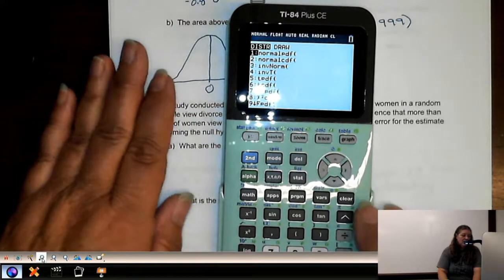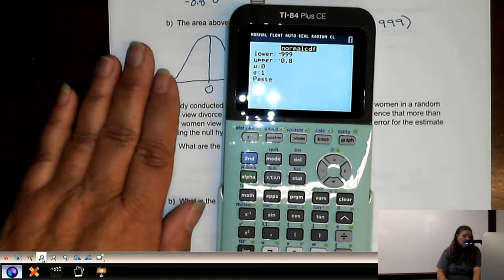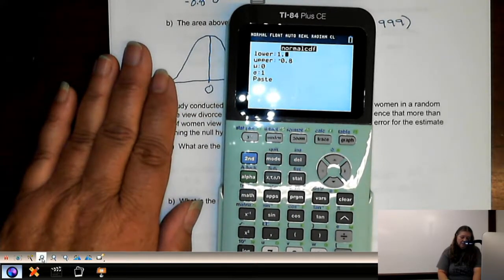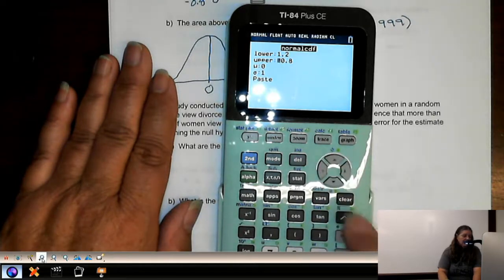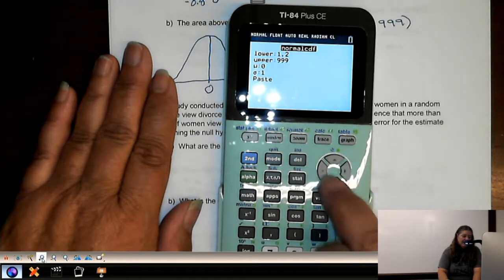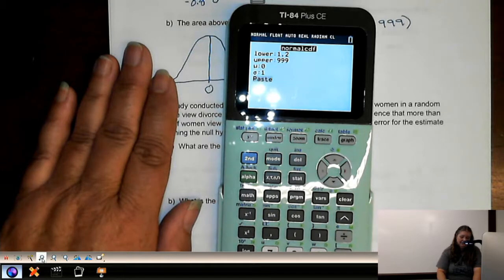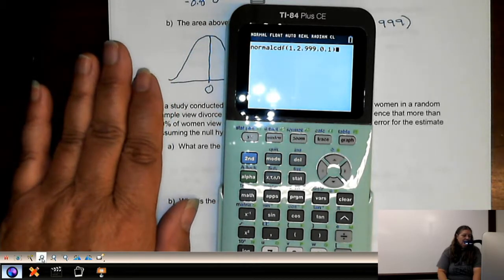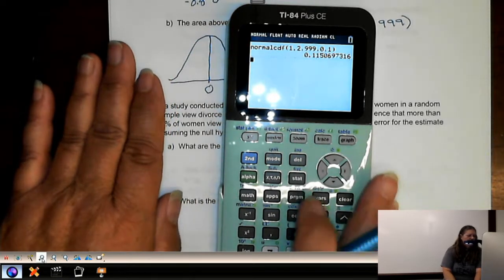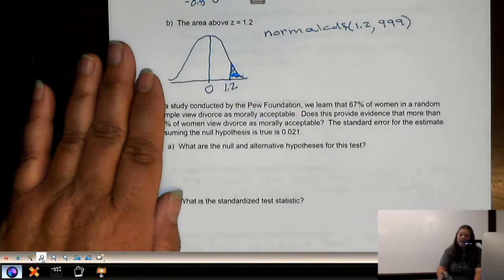So second VARs, normal CDF. 1.2 is our lower. 999 is our upper. The rest stay the same. And then hit enter. We have 0.1151.